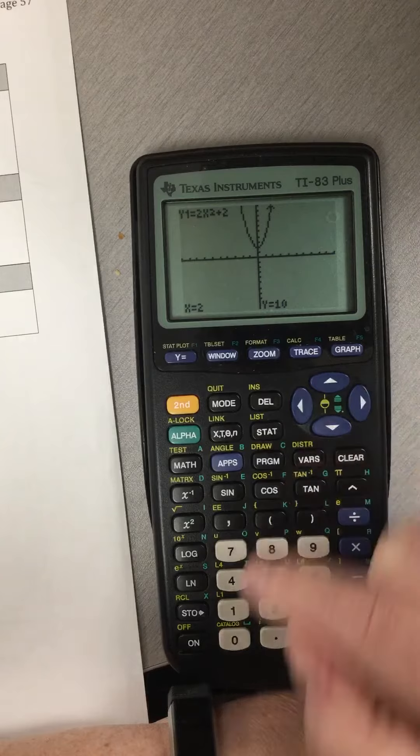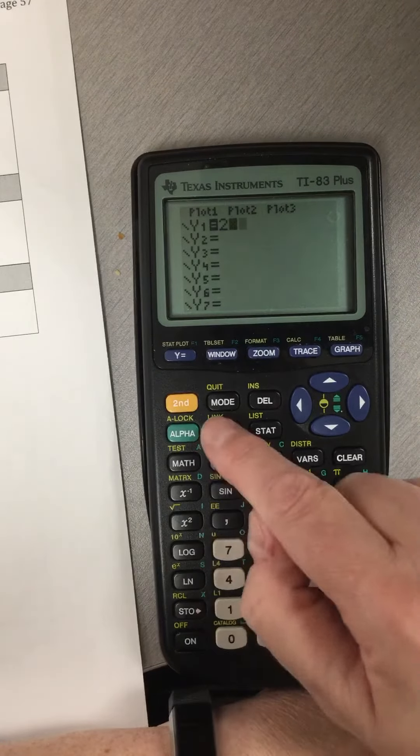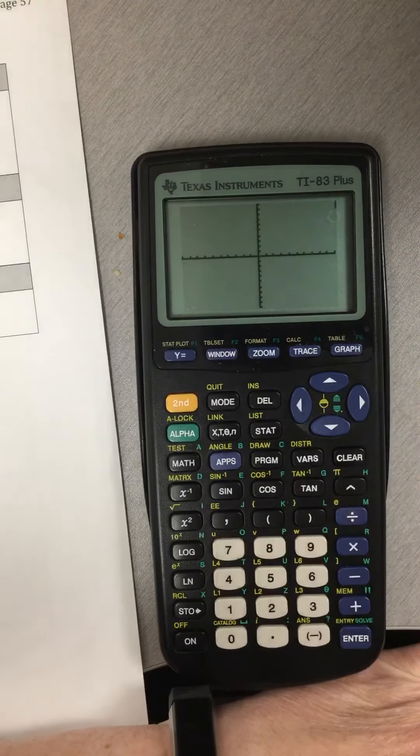Now this will work for any curve. So if I go to a different curve, say I'm going to have 2x minus 2, and I graph that.